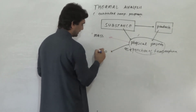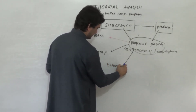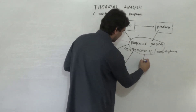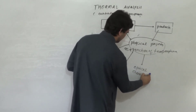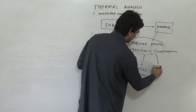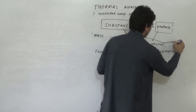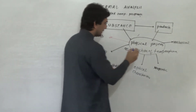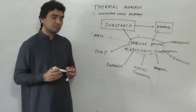Temperature itself can be measured. Heat evolved or absorbed can be measured. Optical properties or optical characteristics can also be taken into account, as well as magnetic properties.